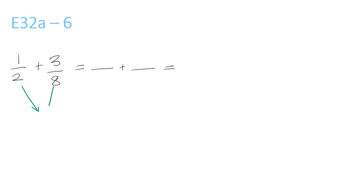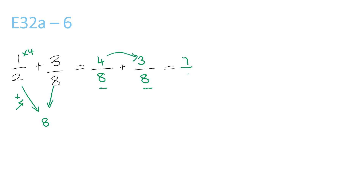2 and 8 both go into 8 — it's the lowest number. 2 times 4 is 8, therefore you times the top by 4. 1 times 4 is 4 over 8. Plus 3 over 8 because it stays the same. Make sure both the numbers at the bottom are the same before adding — if they are, then you can add. 4 plus 3 is 7 over 8.